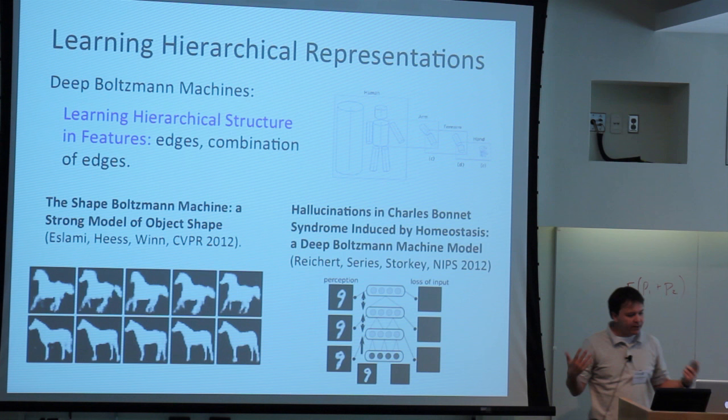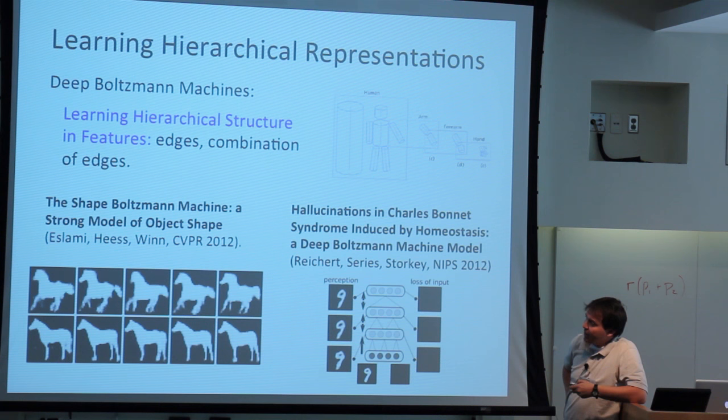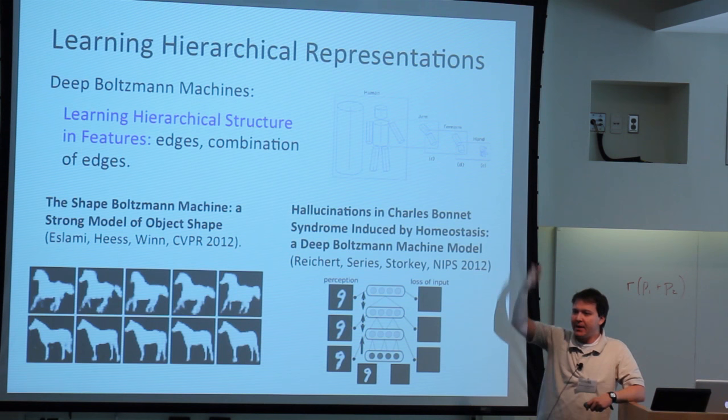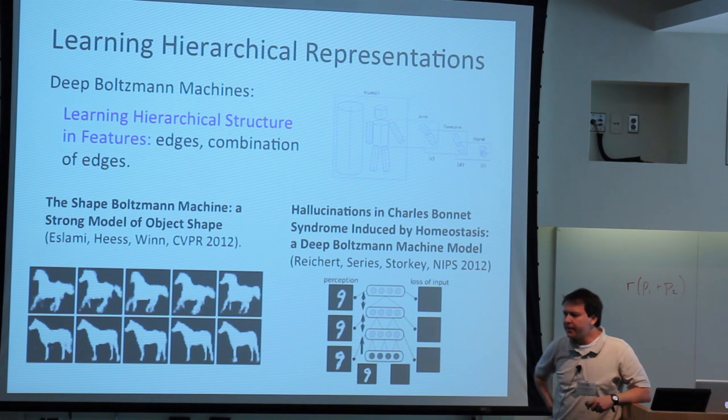These bottom-up top-down models have been used successfully by people at Cambridge for building models of shapes as priors for segmentation. There's also been work on neuroscience-style applications — I don't know exactly what they're doing, but it seems there's a notion of propagating messages up and down, and the model gives some interesting results.